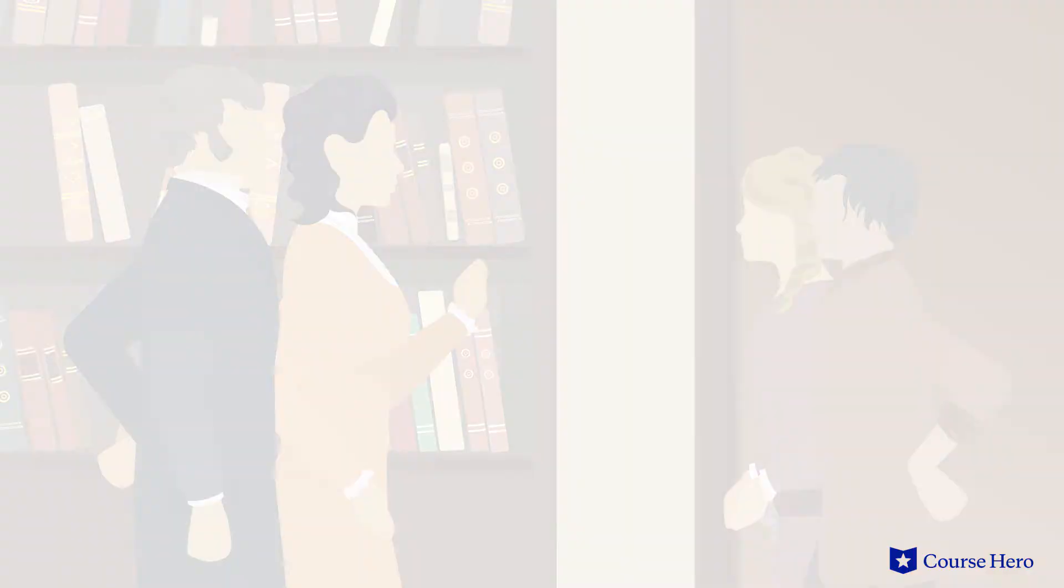Hindley is sent to college and returns with a wife. When Mr. Earnshaw dies, Hindley becomes master of Wuthering Heights and turns Heathcliff into a servant, humiliating and abusing him.